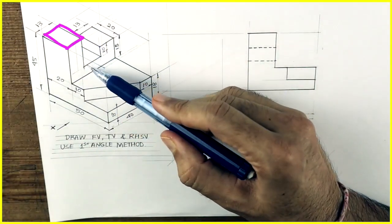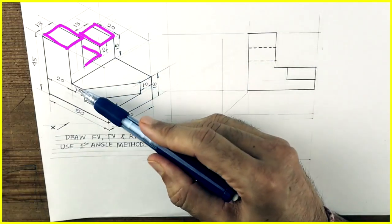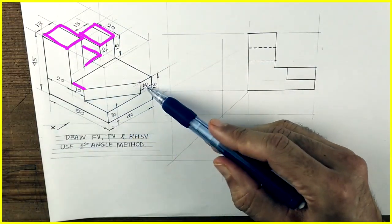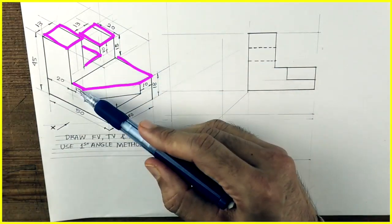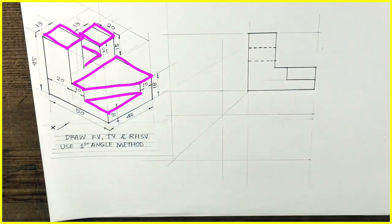In top view you will see this rectangle, then the second one and third one. There are three rectangles. Then you'll see this part as well as this triangle. So we need to draw this in top view.